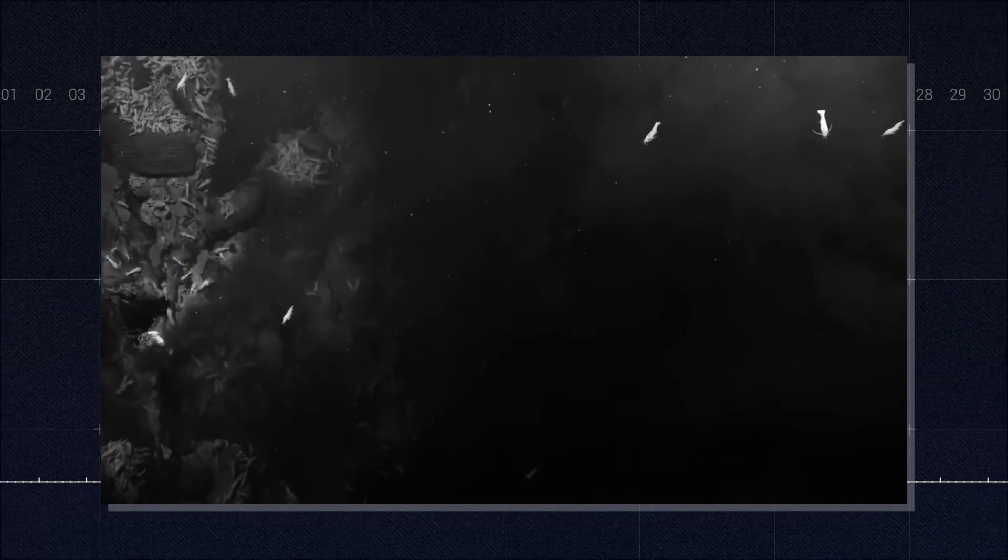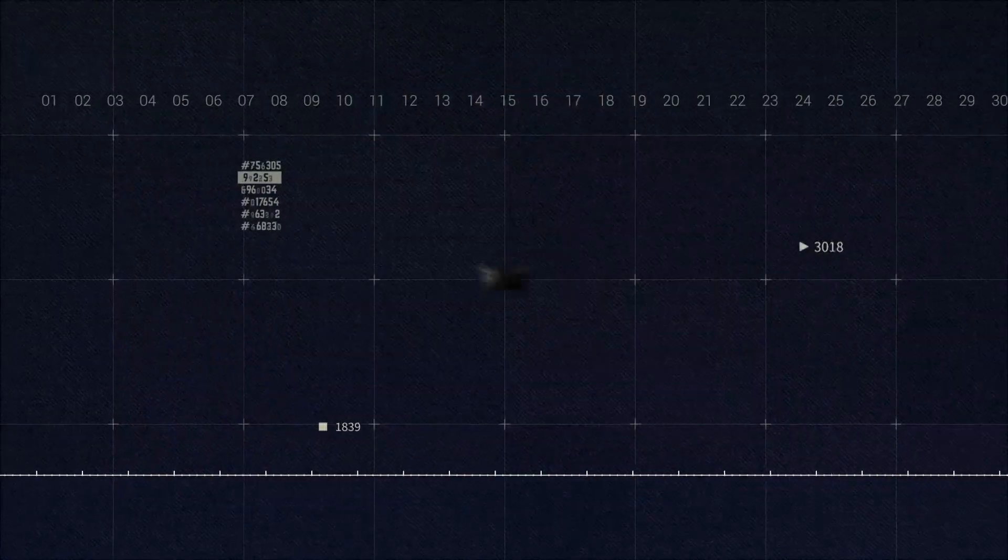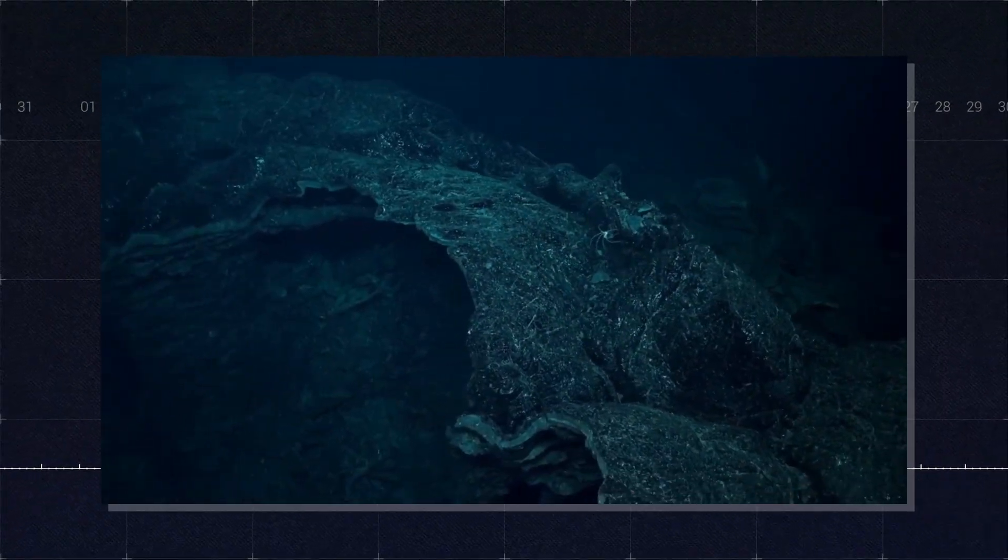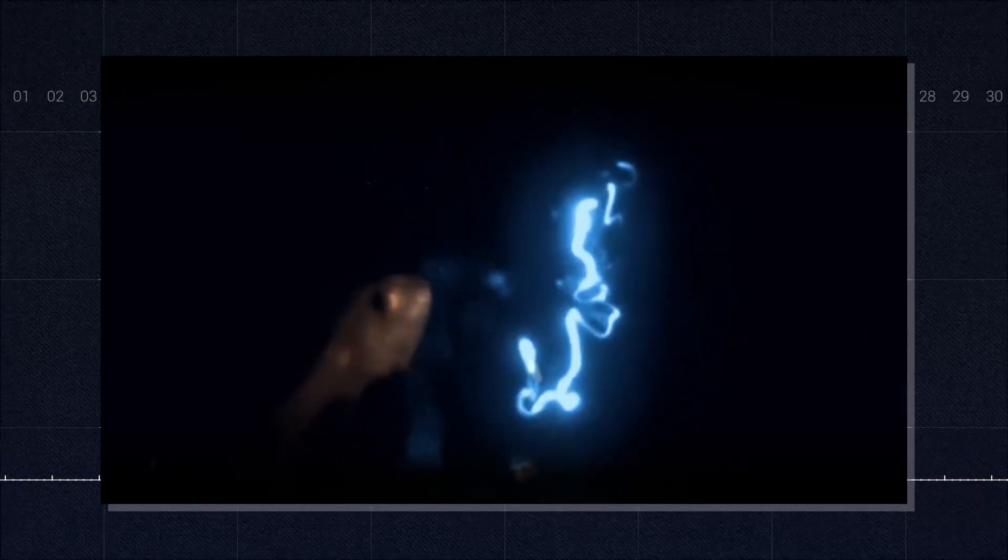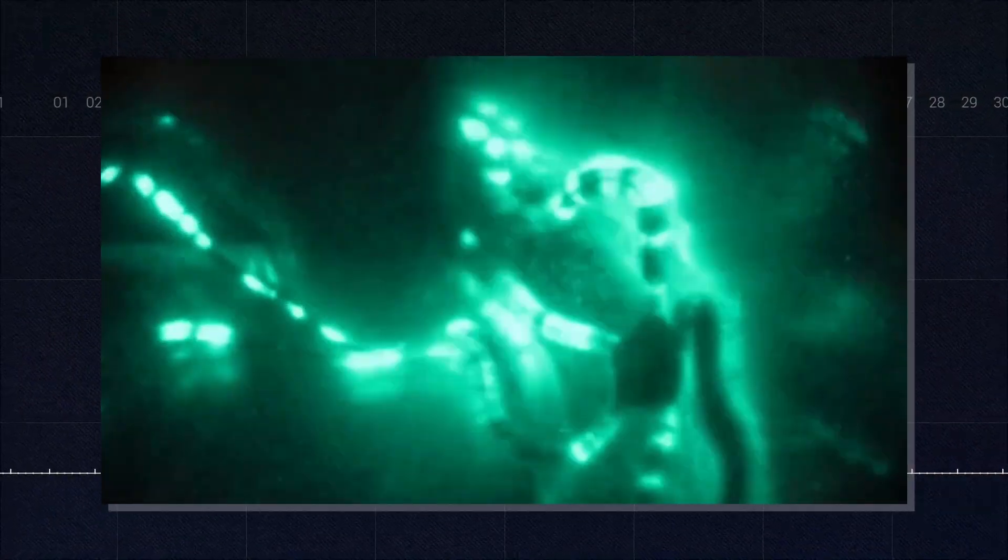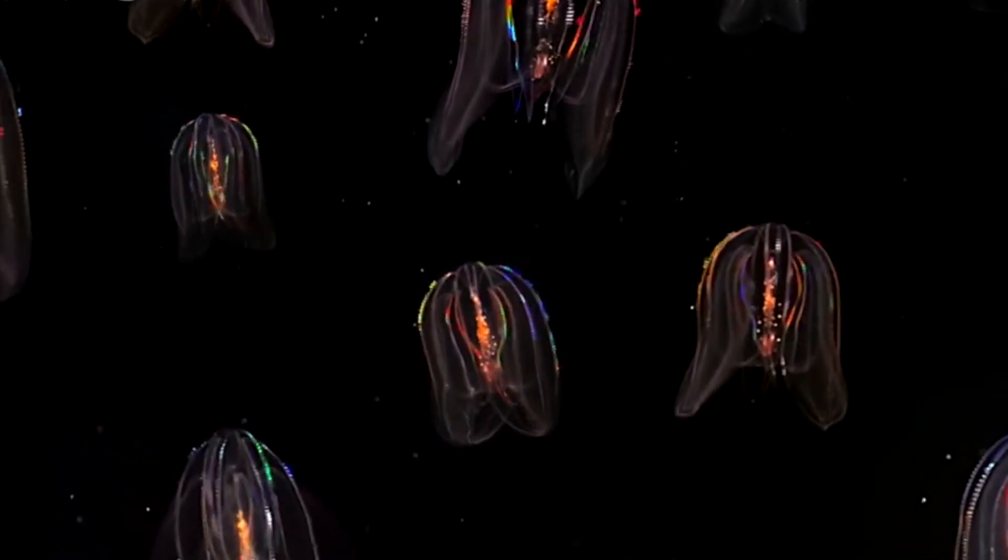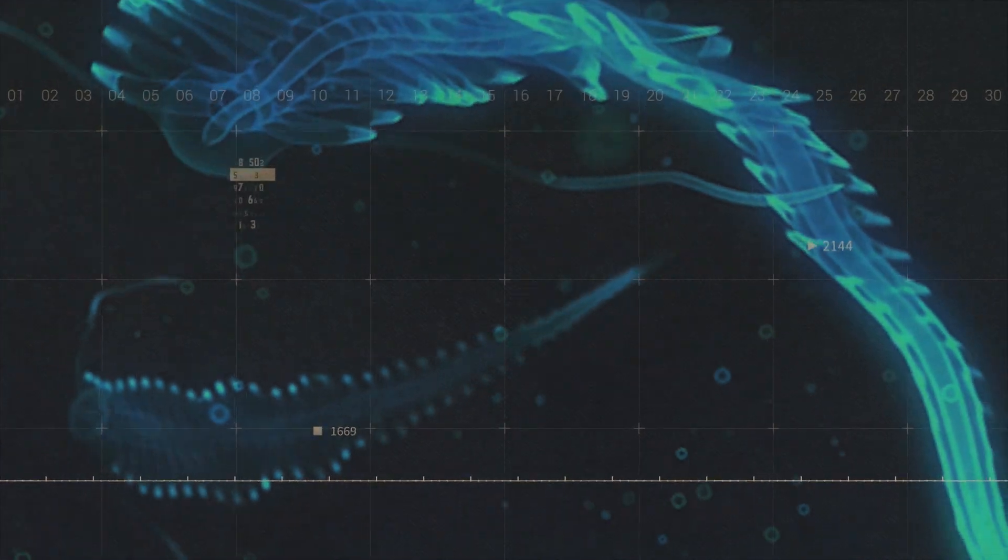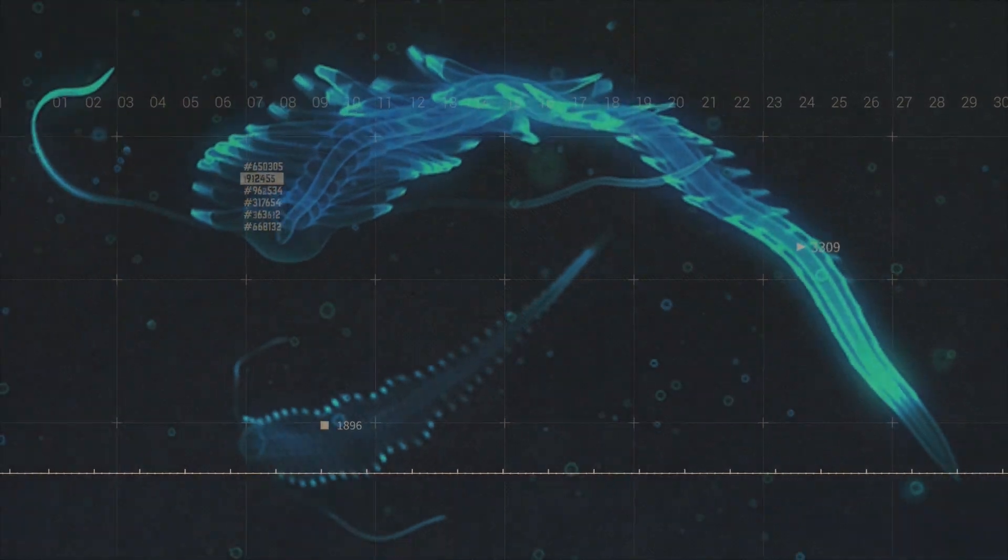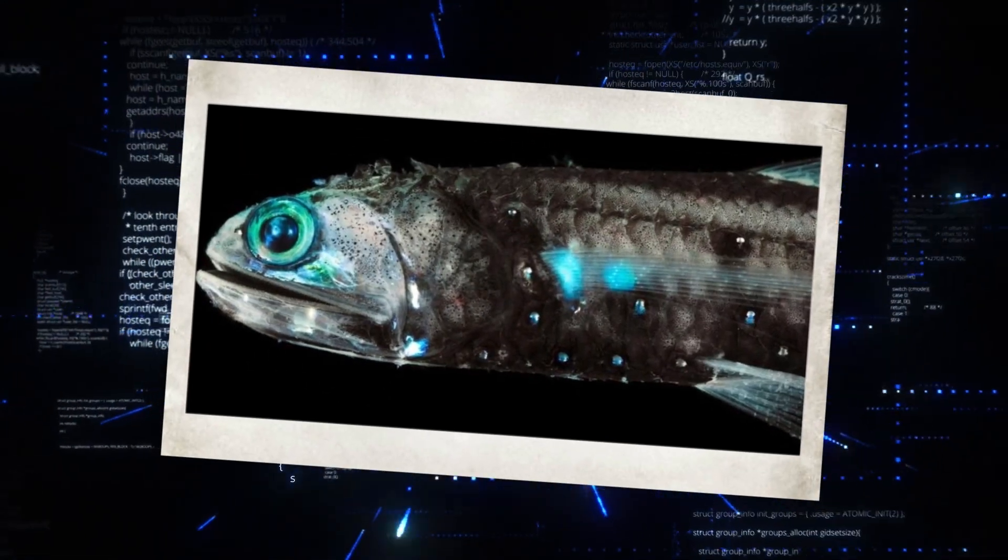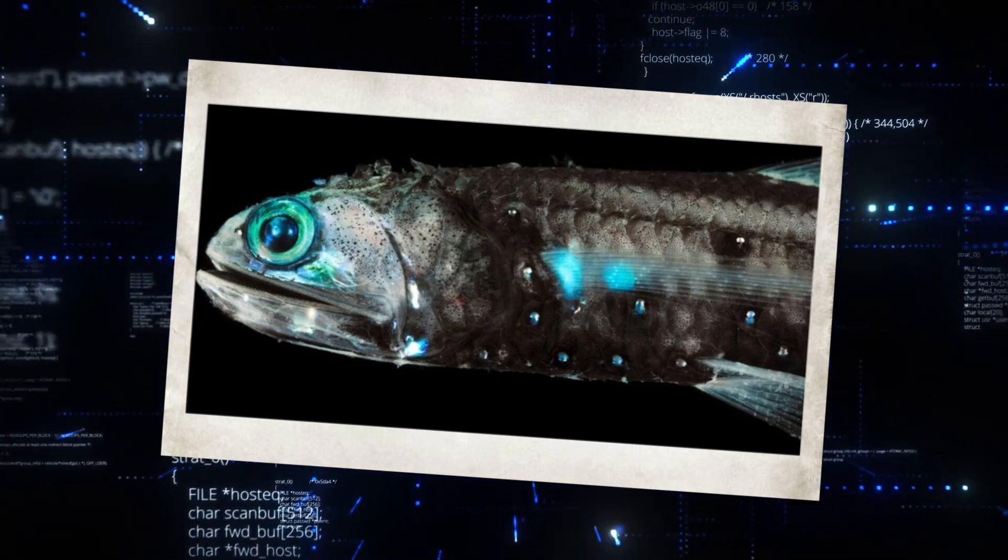In the vast, dark expanse of the deep ocean, finding a mate can be a daunting task. Here, too, bioluminescence plays a crucial role, serving as a beacon for potential partners. Many deep-sea creatures use specific patterns of light to identify members of their own species. The lanternfish, for instance, has a unique arrangement of photophores that acts like a species-specific barcode.